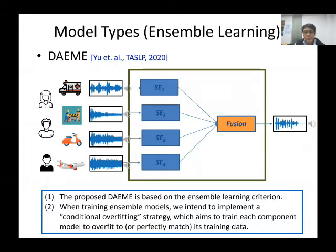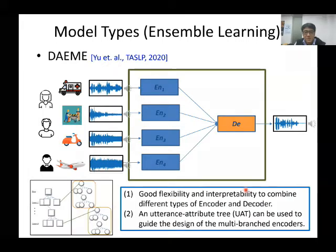Instead of training a very large speech enhancement model, we propose an ensemble learning framework termed DAEME. The model is based on ensemble learning criteria using conditional overfitting strategy, which trains each component model to overfit to a subset of training data. When preparing the DAEME system, we first train optimal speech enhancement models. Then a fusion model is trained by mapping the outputs of these speech enhancement models to generate the final enhanced speech. We also propose a user attribute tree (UAT) as a reference to design the optimal system architecture.